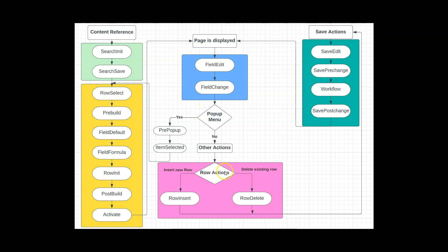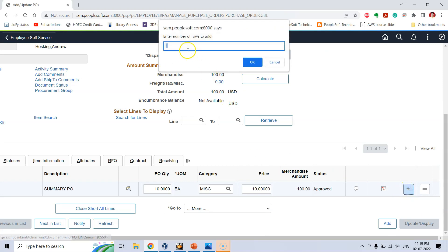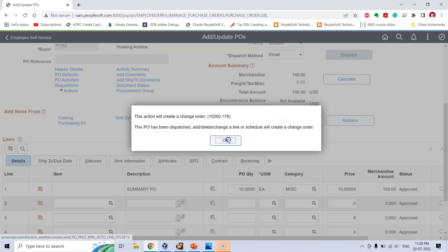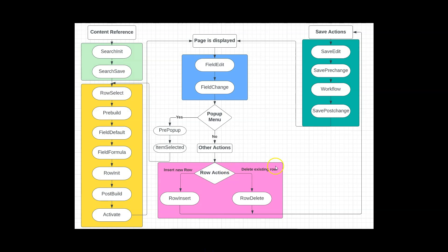The fourth general area is the row actions general area. If I want to add a new row by clicking the add button, which prompts for the number of rows to add, I fall under the row actions general area. Similarly, if I delete or remove an existing row, that is also part of row actions. Hence in this area we have the row insert and row delete events.